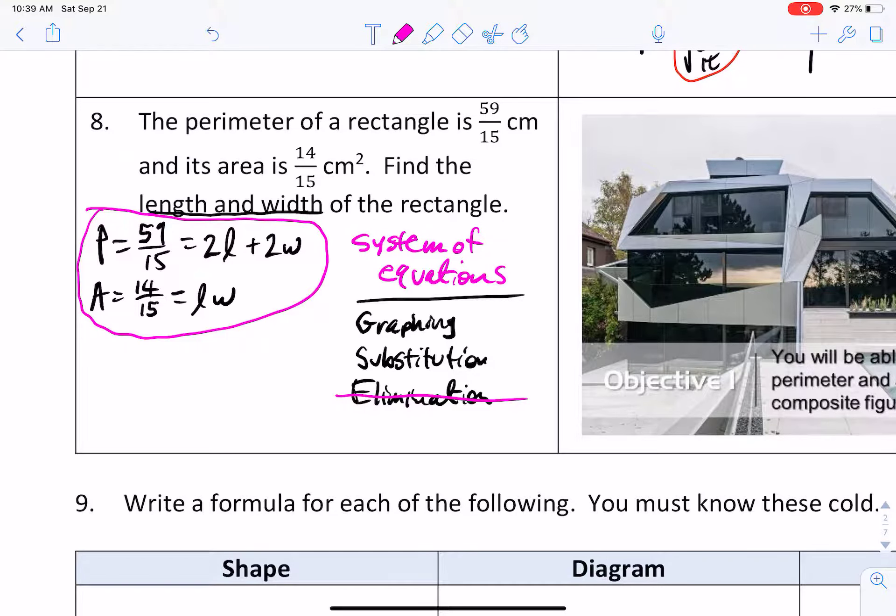So that leaves us with graphing and substitution. If we chose to do the graphing, we could. We'd let x equal the length, y equal the width, rewrite the equations, and then solve them for y so you could put them into the graphing calculator to see where they intersect. You could do it, but we're not going to. Instead, we're going to do this by substitution.